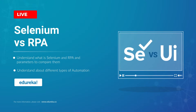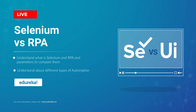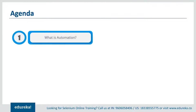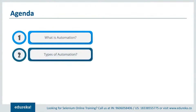So without any further ado, let's take a look at the agenda for this session. First, let's start by understanding what automation is and take a real-time example that demonstrates its advantages. Then we'll discuss the different types of automation that exist, and after that I'll give you a brief introduction to the different forms of automation — automation testing and business process automation — which are the major fields where one can try to build a career.